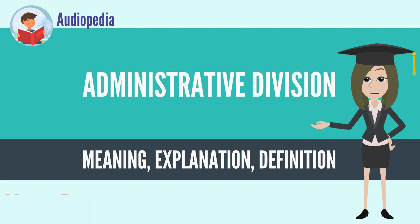Administrative divisions are granted a certain degree of autonomy and are usually required to manage themselves through their own local governments. Countries are divided up into these smaller units to make managing their land and the affairs of their people easier.